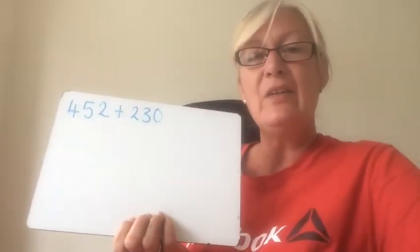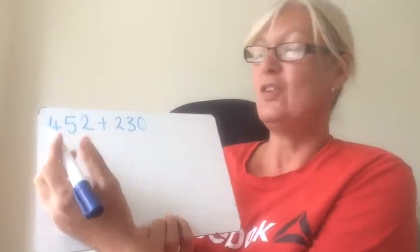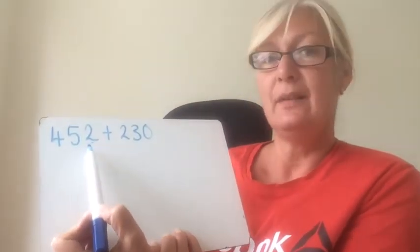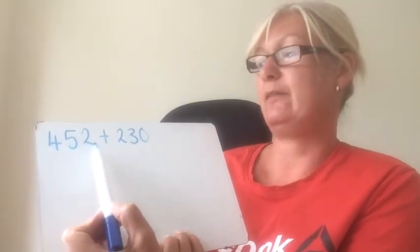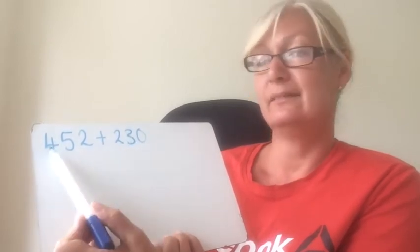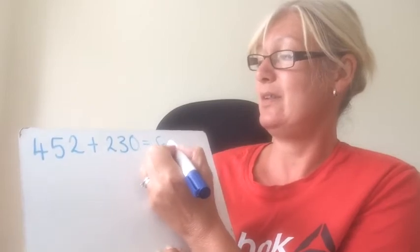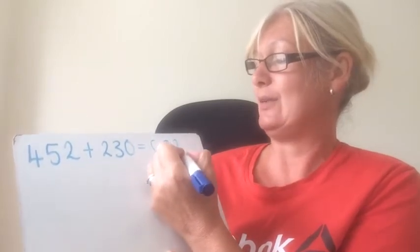So let's have a look at how you could have done that with a counting on method. Start with a bigger number, 452. Add 200. That will give me 652. Add thirty. 682.